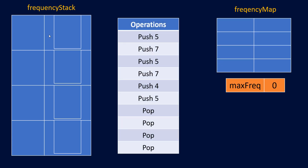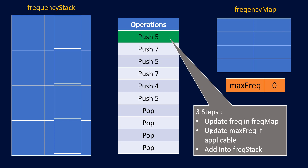Starting with maximum frequency at 0, we begin pushing elements. There are three steps for push: update the frequency map, update the maximum frequency if it has changed, and add the element to the frequency stack. When we push 5, we insert it with count 1 in the frequency map, update max frequency from 0 to 1, and push 5 into the stack corresponding to key 1 in the frequency stack.